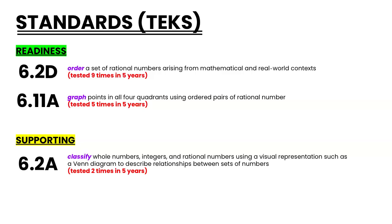As we take a quick look at the TEKS for this second part of the unit, you can see that ordering a set of rational numbers has been tested 9 times in 5 years, so that is a pretty heavy-hitting readiness standard. 6.11a has been tested the least number of times possible for a readiness standard — only one time per year the last five years. So while it is important and we know it is going to show up on the test, it is maybe not as important as ordering a set of rational numbers. Classifying whole numbers, integers, and rational numbers using that visual representation has only been tested twice in the last five years, but our students typically do pretty well on this TEKS, and if it shows up on the STAAR test, we want to make sure that they get that one question correct.